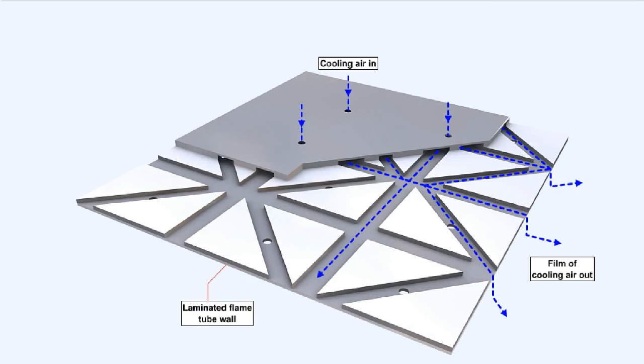Other engine designs use a different method of cooling the air casing, which is called transpiration cooling, where a film of air flows between laminations which form the flame tube wall, and then exits the laminations to form an insulating film of air within the flame tube.